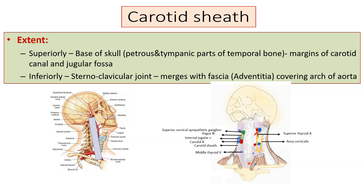In this picture you can see the carotid sheath and identify it. One of the contents you can see is the carotid artery, the internal jugular vein, and the vagus nerve. Behind the carotid sheath is the sympathetic chain. Anterior to the carotid sheath, where the sheath is removed, you are seeing the ansa cervicalis.